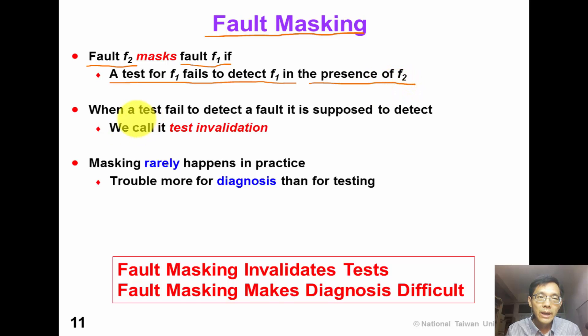This is what we call fault masking. Fault F2 masking fault F1. If a test for F1 fails to detect F1 in the presence of F2. When a test fails to detect a fault, it is supposed to detect. We call this test invalidation. In practice, fault masking happens very rarely. It is trouble more for diagnosis than for testing.